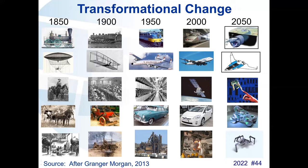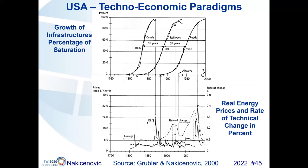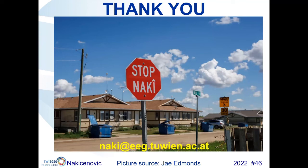When old systems like canals saturate in history, new systems were introduced; when railways saturated, we had roads, and maybe we'll think about Internet Plus when the current one saturates. In those periods, we have a strong flare of prices and inflation, and a very high rate of technological change of new technologies. Now the 50 years are up in 2020–2025, so I personally hope that we will see a new spurt of innovation leading us toward some of those attractive futures, and that the current price hike will end once those technologies take over. And this last slide is a picture that Jay sent me — stop, Naki, it's time to stop. Thank you very much.